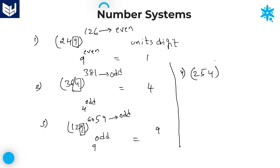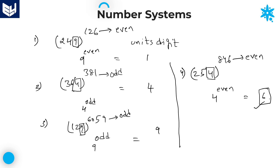One last example: 254 whole to the power of 846. Here the number is ending with 4 and the power value is even. For 4 to the power of even, the required units digit is always 6. In this way, we can solve problems by using the second category digits.